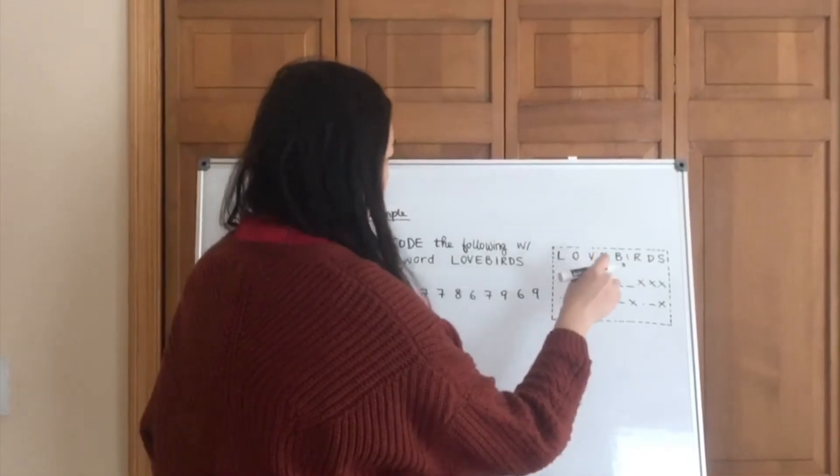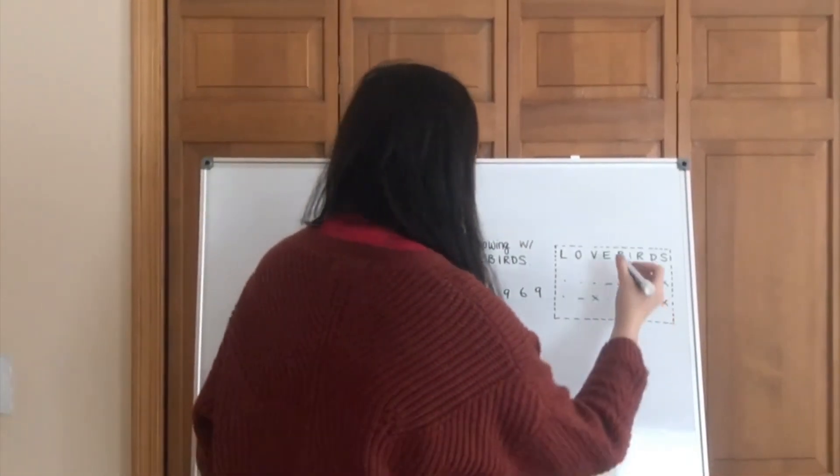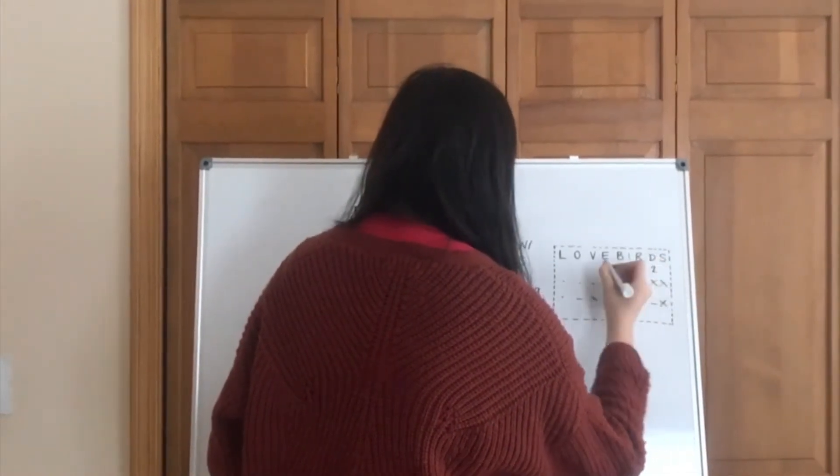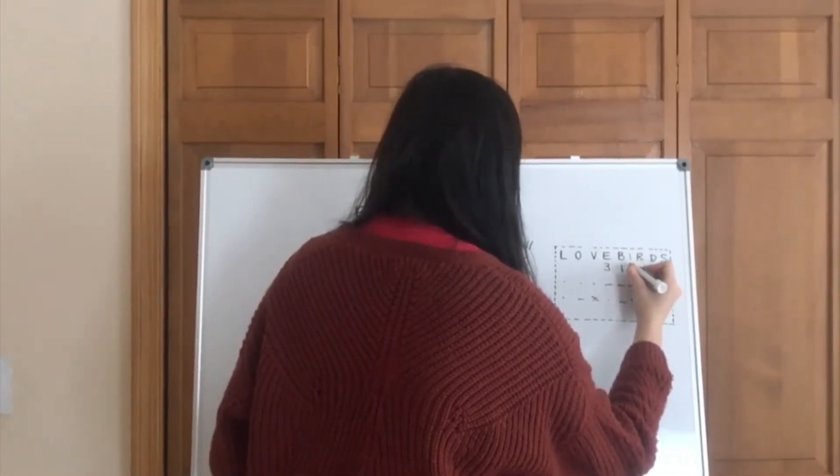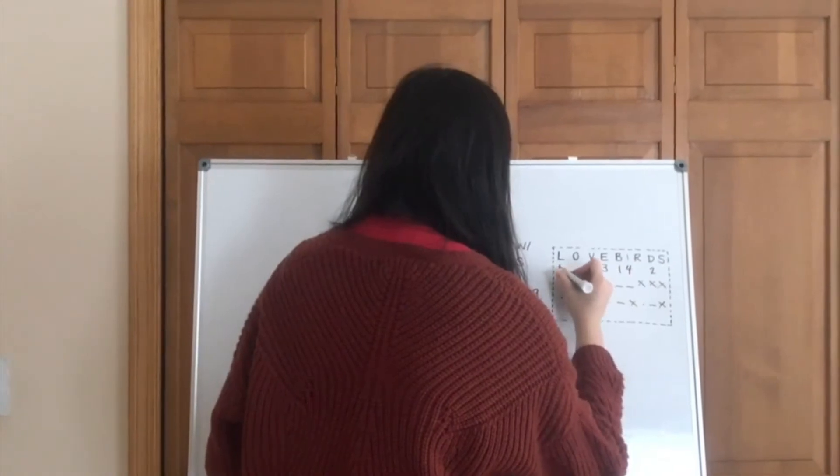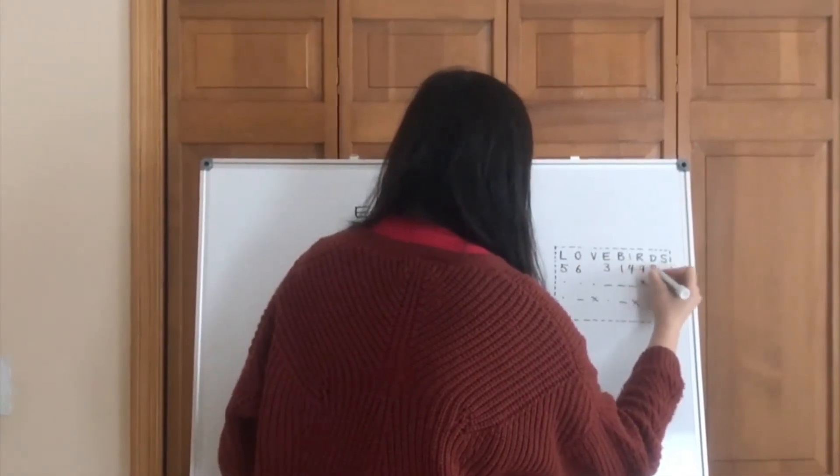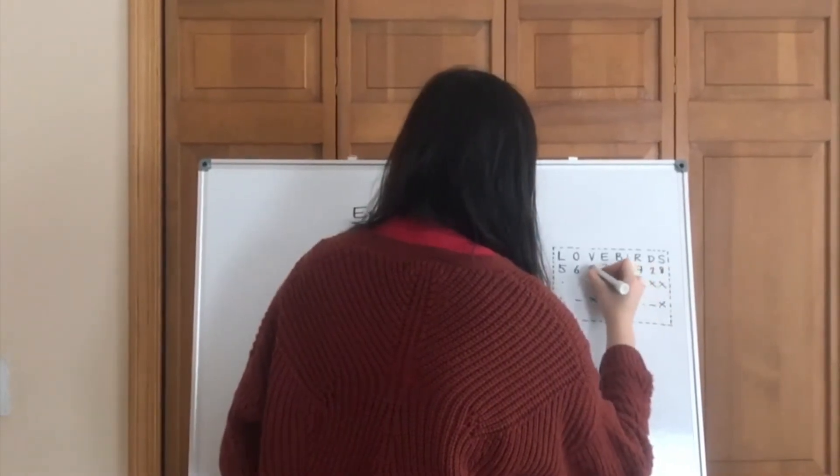So let's start counting and numbering the letters. So b is the first, and then d is second, e is third, four, five, six, seven, eight, and nine.